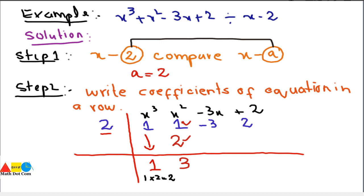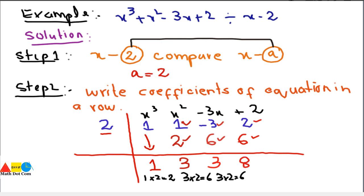Repeat the same step: multiply 3 by a, which is 2, giving 6. Write this 6 in the next position. Add -3 and 6: -3 + 6 = 3. Then multiply 3 by 2 again to get 6. Add 2 and 6: 6 + 2 = 8. The synthetic division ends here. This 8 is the remainder.